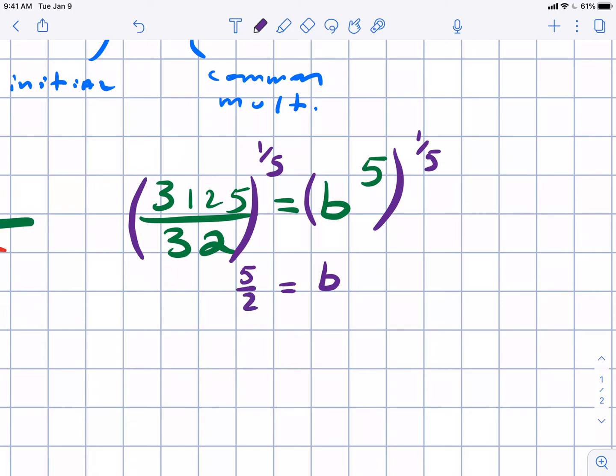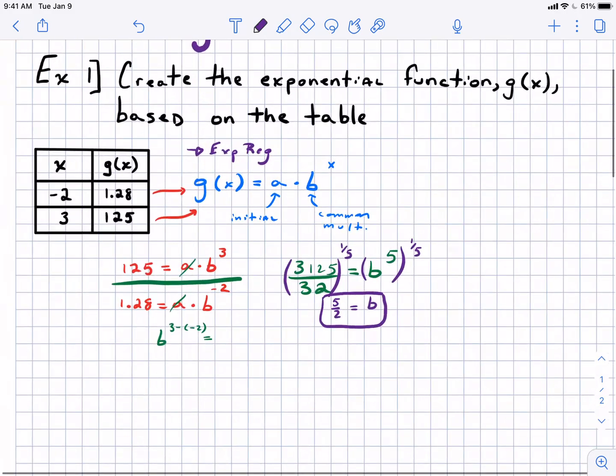So the 3125 over 32, if you still have it on your home screen, just hit answer to the one-fifth power. Hit the exponent button, make your exponent one-fifth. Once again, if it does give you a decimal, hit math frac. That will give us our b value, so I'm getting five halves. I like that, I prefer working with improper fractions.